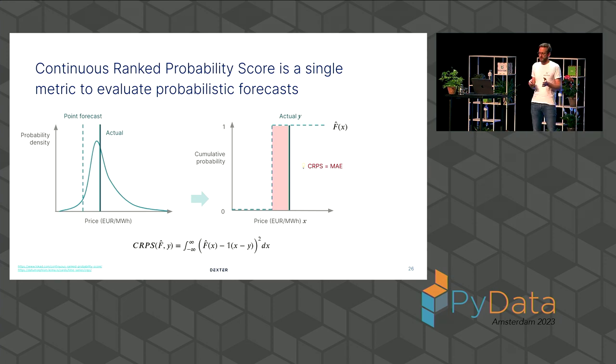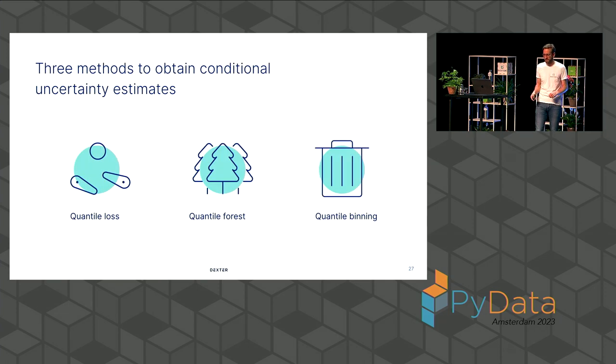And now back to our probabilistic forecasting method. Because recall our baseline method gave the same result for every, same uncertainty interval for every observation. I will now outline three methods to obtain conditional uncertainty estimates. And they all boil down to quantile regression. And this is important because uncertainty is not always the same. If it's a sunny day, you might have a different uncertainty profile than when it's a cloudy day. And this is called heteroscedasticity in statistical terms. So the variance is not the same.